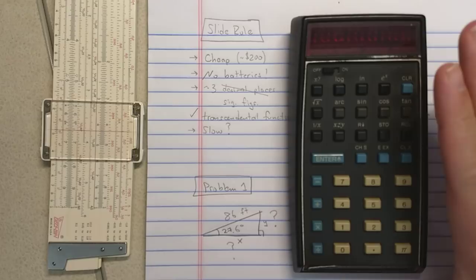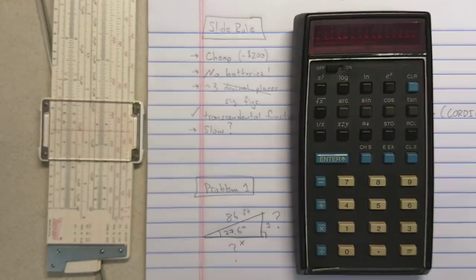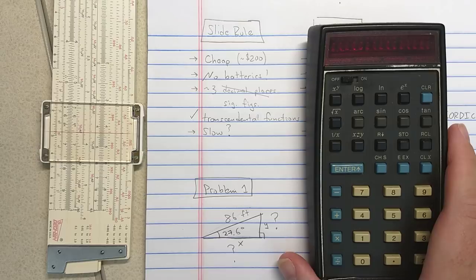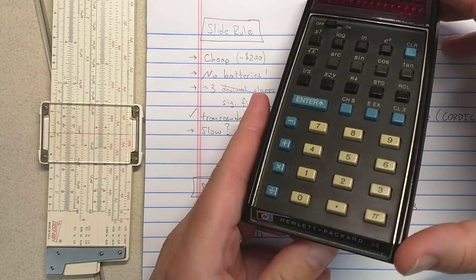Okay, today we have a treat. We have here an HP-35 calculator. The HP-35 calculator is famous for being the first scientific calculator, which is a pocket calculator. There are of course desktop scientific calculators, but in 1972 HP releases the HP-35 calculator.